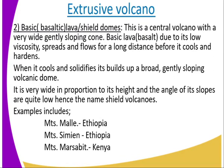Number two, we have the basic or basaltic lava dome, also called shield volcanoes. This is a central volcano with a very wide, gently sloping cone, indicating that the material used to form it was basic lava due to its low viscosity. The lava spreads and flows for a long distance before it cools and solidifies, building up a broad, gently sloping volcanic dome. It is very wide in proportion to its height, and the angles of its slopes are quite low — hence the name shield volcanoes. Examples include Mount Meru in Ethiopia, Mount Simeon also in Ethiopia, and Mount Marsabit in Kenya.